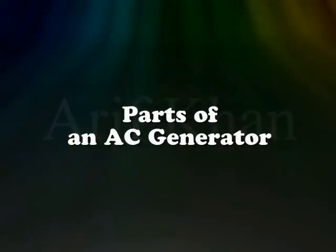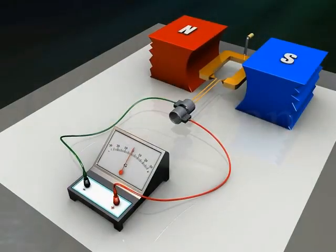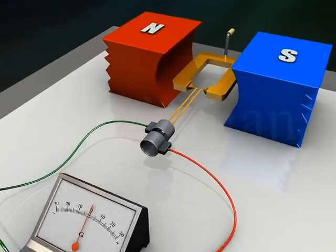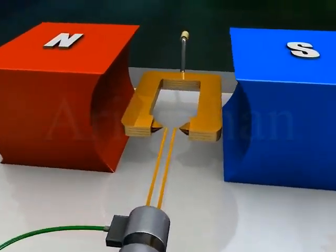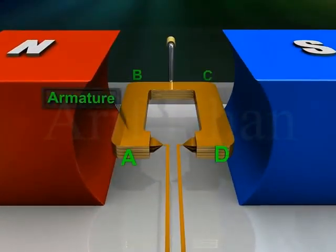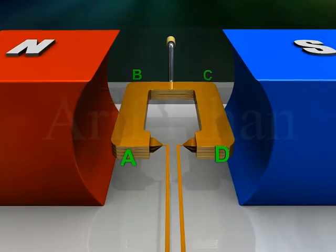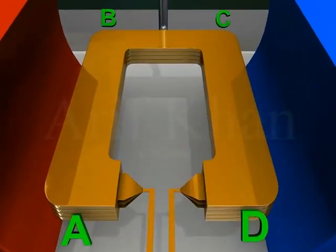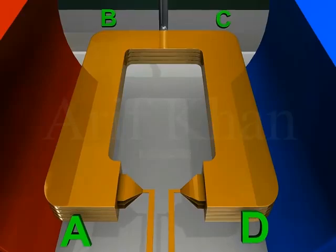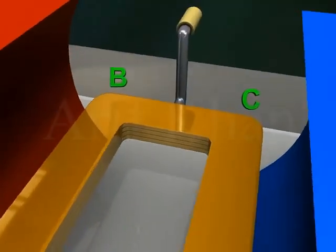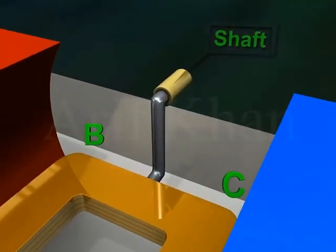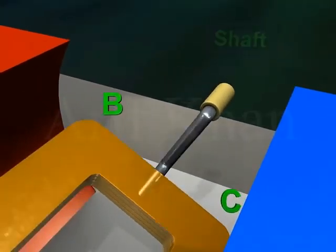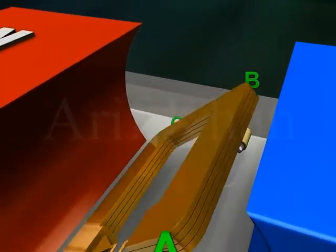An AC generator has an armature ABCD. It is a rectangular coil with many turns wound around a soft iron core, and a shaft which can be rotated rapidly.